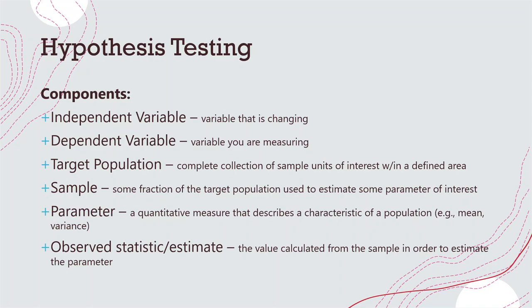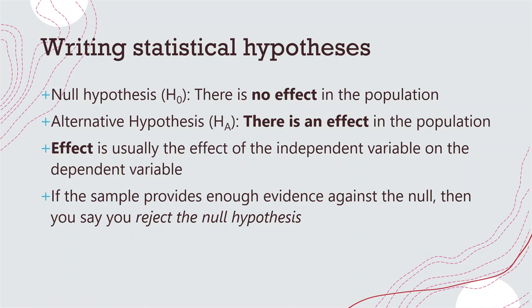When we talk about hypotheses, we almost always have a null hypothesis and an alternative hypothesis for every statistical test we run. The null hypothesis, often denoted as H0, says that there is no effect in the population — no effect of your independent variable on your dependent variable. The alternative hypothesis, often denoted as HA, is when there is an effect on the population — usually the effect of your independent variable on the dependent variable, such as the effect of forest type (clear-cut or old growth) on trout weight. If your sample provides enough evidence against the null hypothesis, you would reject it and accept the alternative hypothesis.